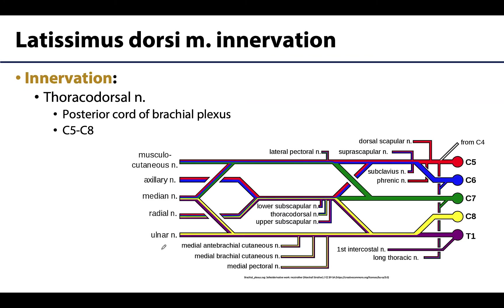The thoracodorsal nerve will provide both the afferent and efferent innervation of the latissimus dorsi, and this is a branch of the brachial plexus, which we are going to spend a great deal of time with during the musculoskeletal content later in the year. Kind of across the board, if a muscle is associated with the upper limb, it almost always is going to be innervated by a nerve branch of this brachial plexus, and that is true of the thoracodorsal from the posterior cord of the brachial plexus.